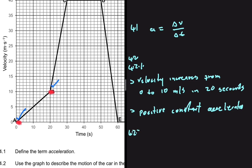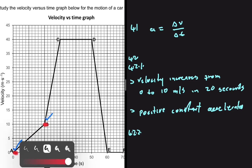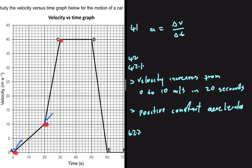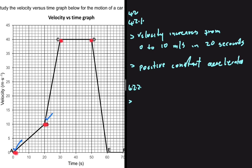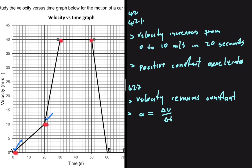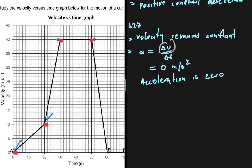For 4.2.2, with regards to section CD: at C, we have a velocity of 40 meters per second, and at D, we also have a velocity of 40 meters per second. The velocity remains constant — there is no increase or decrease. For acceleration, since there is no change in velocity, the acceleration is 0 meters per second squared.